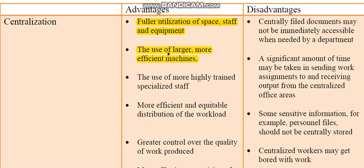The second advantage is the use of larger, more efficient machines. By having all equipment located in one area, everyone will have to come to this area to do specific tasks, use a photocopier, or use a scanner. Therefore, we don't have to put all of this equipment in each area of the firm, meaning we can purchase larger and more efficient machinery since we only need to purchase one.